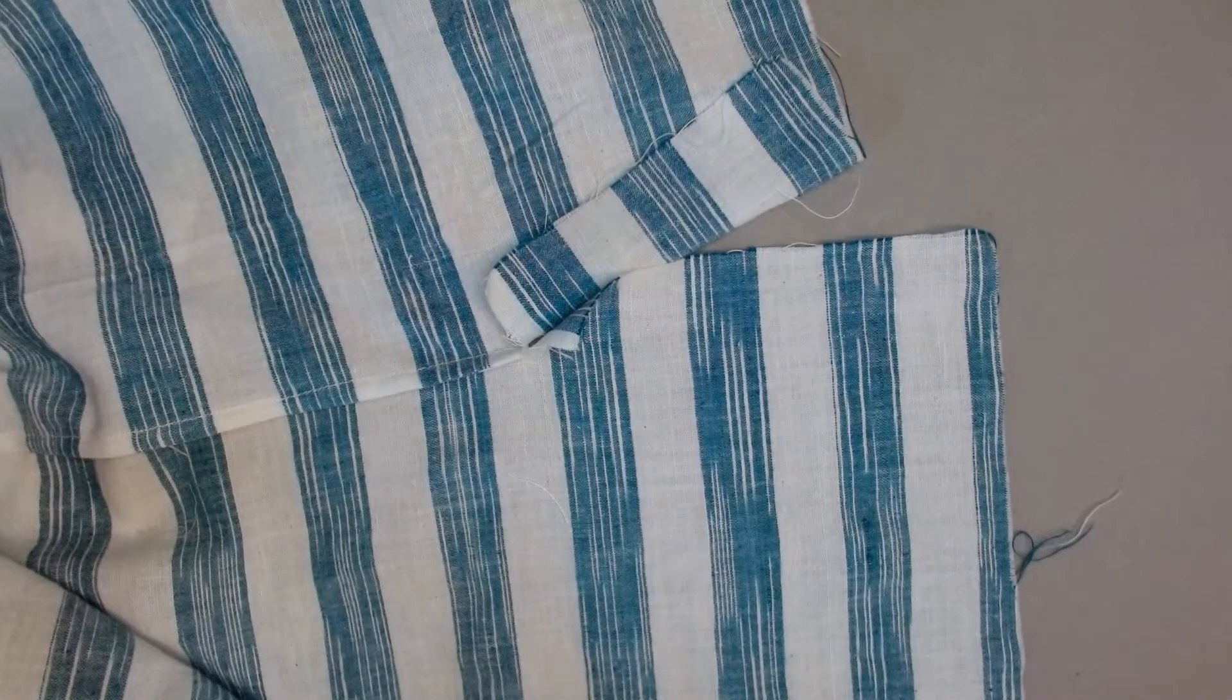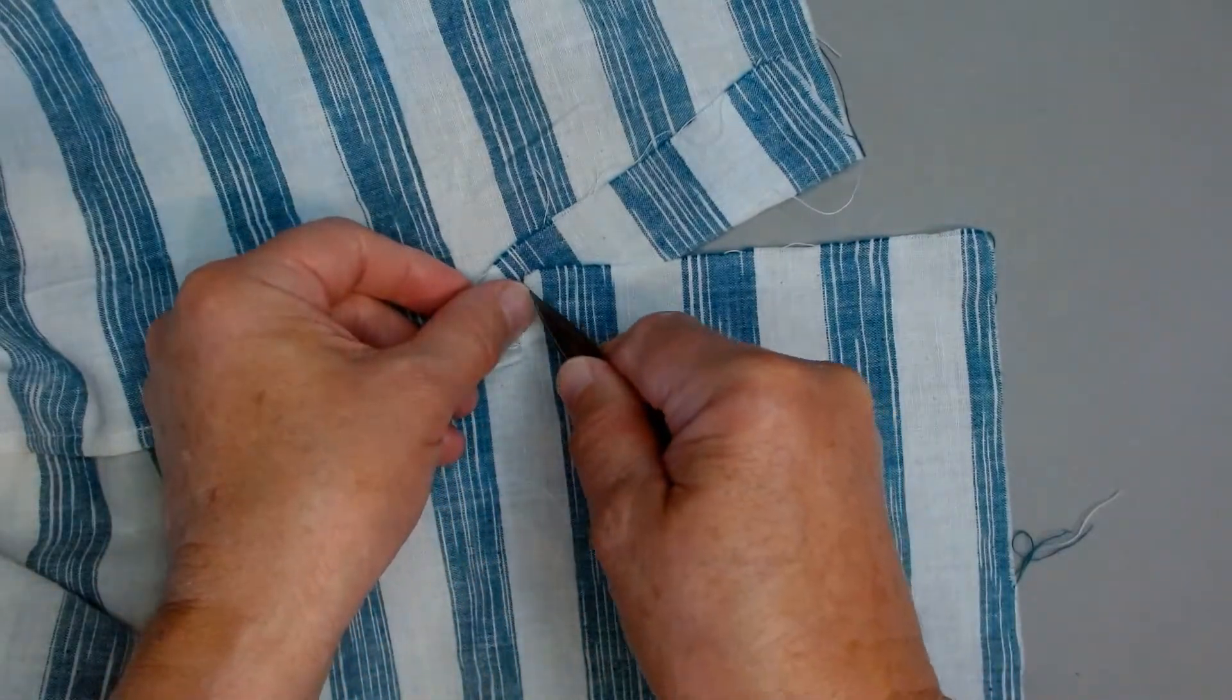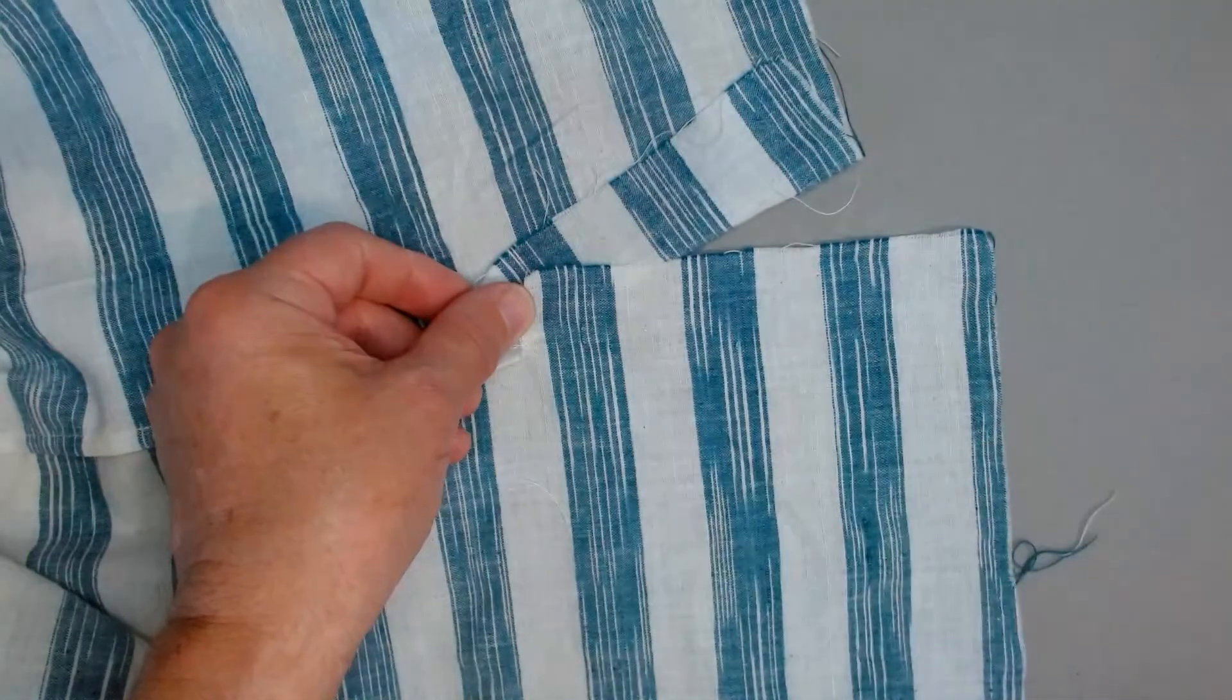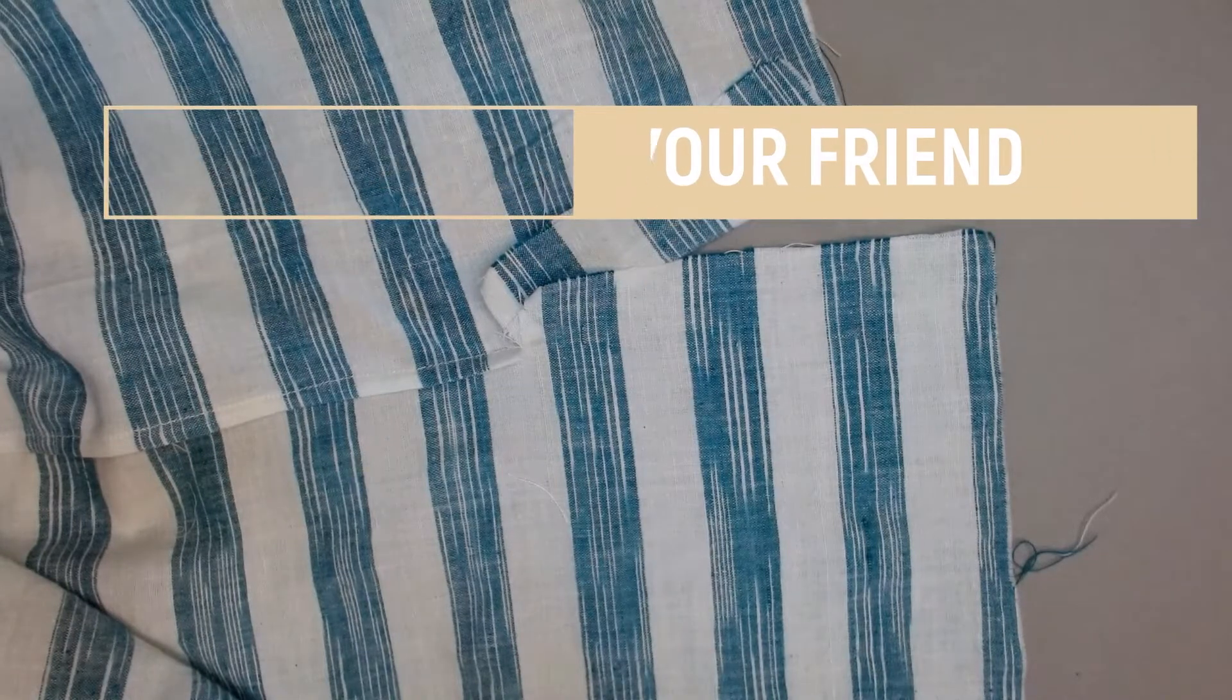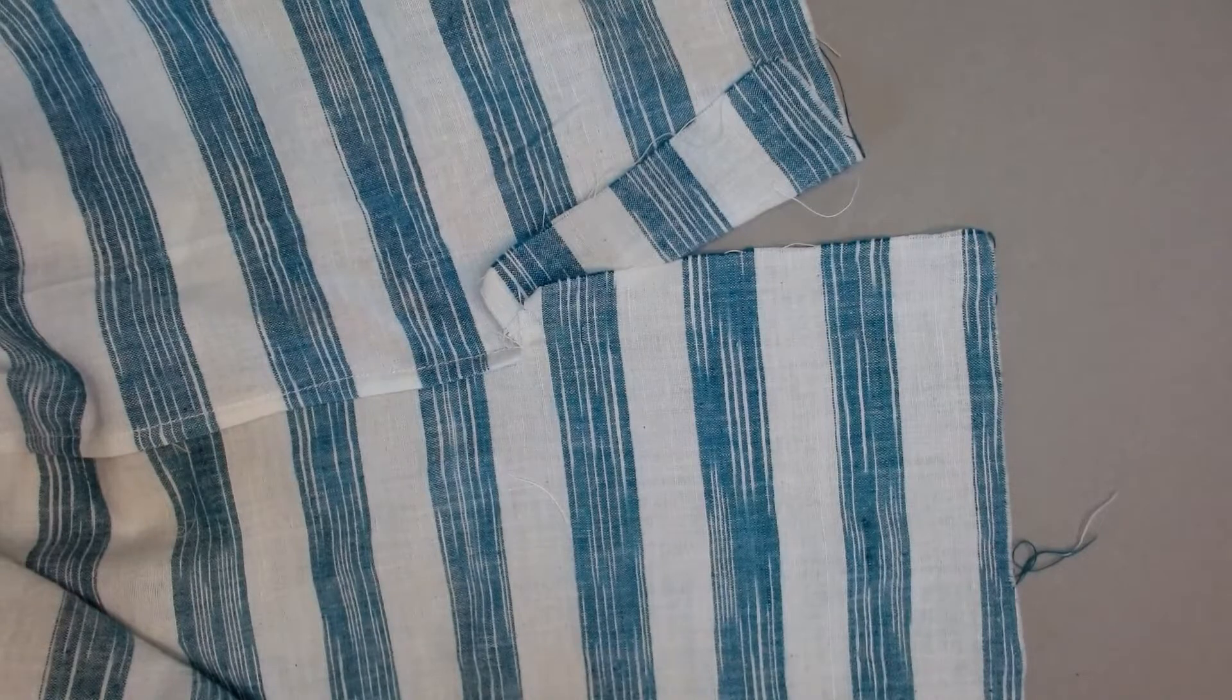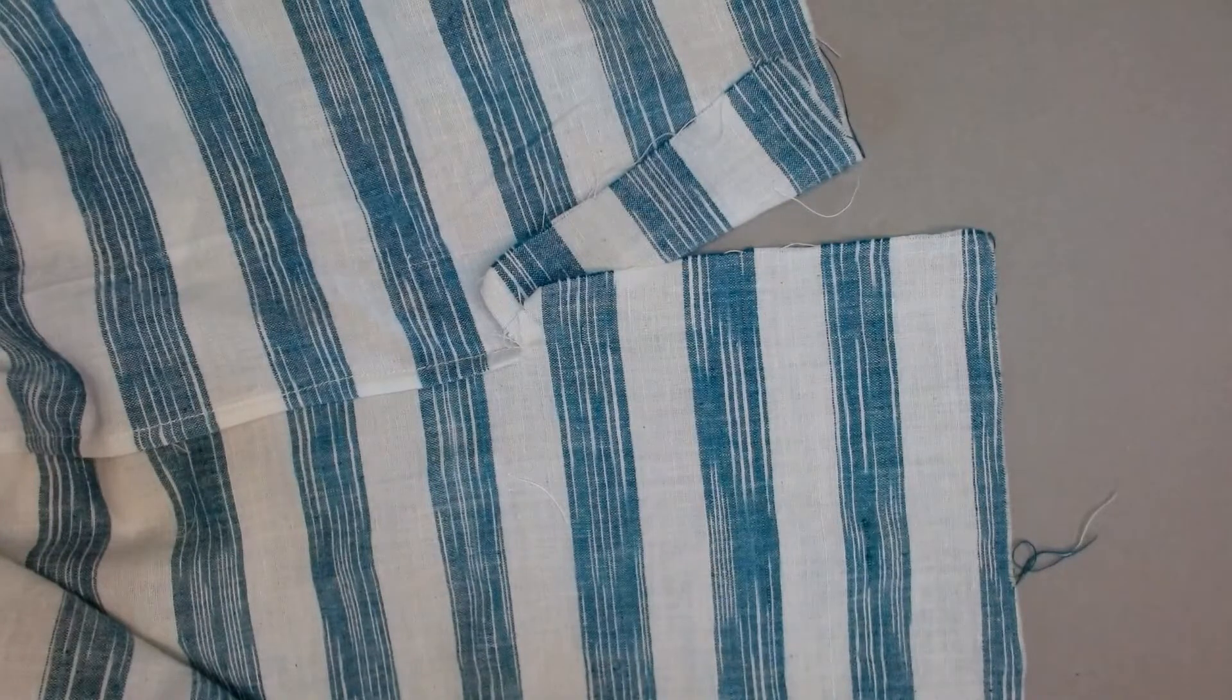The next step is probably not going to be particularly popular with a lot of people, but it's important to stay stitch a quarter of an inch all the way around your shirt bottom. This will make pressing that little quarter of an inch seam very crisp. And it takes a little bit of time. I know people hate stay stitching,